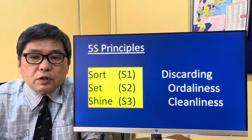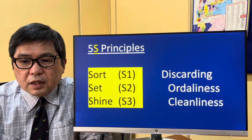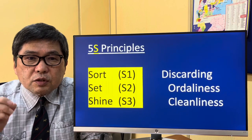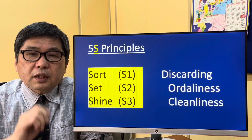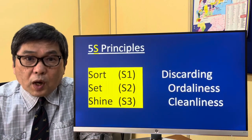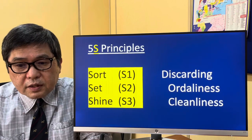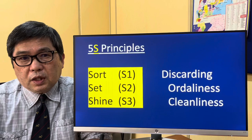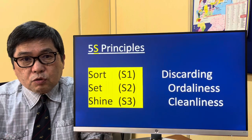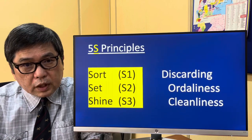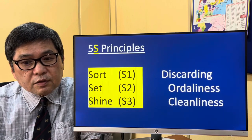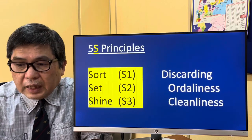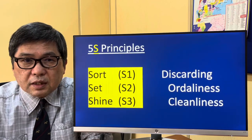Sort, set and shine respectively: sort means discarding unnecessary things from your workplace. Setting means giving proper orderliness to the situation where you have already removed unnecessary things. And shining means maintaining cleanliness.